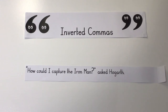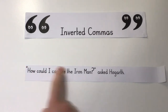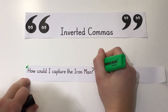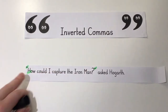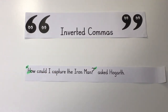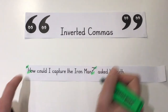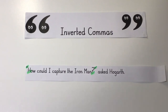If the direct speech is a question or an exclamation, then we can use either a question mark or an exclamation mark before the closing inverted commas. Let's have a look: "How could I capture the iron man?" asked Hogarth. Hogarth is asking a question, so we have our inverted commas around the direct speech, a capital letter to begin, and because he's asking a question, we have a question mark rather than a comma before the closing speech marks.